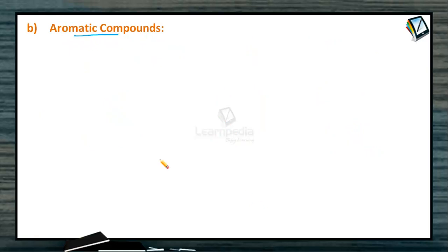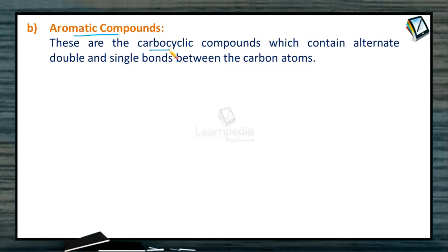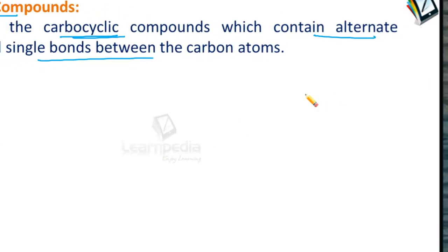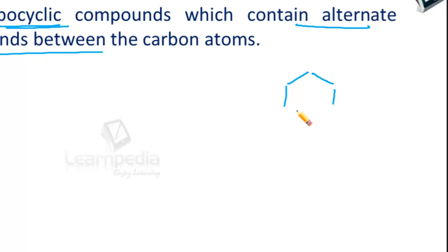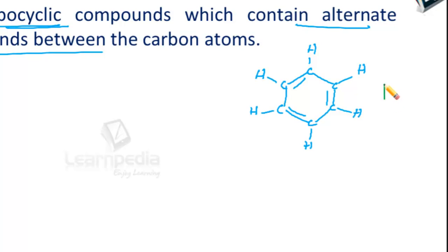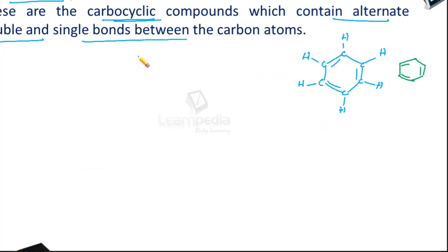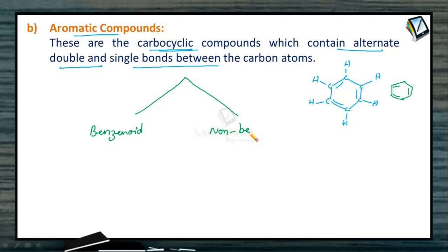The next type is aromatic compounds. These are also carbocyclic compounds which contain alternate double and single bonds between the carbon atoms. The best example is benzene, in which six carbon atoms are linked with each other by alternate double and single bonds. These carbocyclic aromatic compounds are further divided into two types: benzenoid and non-benzenoid compounds.